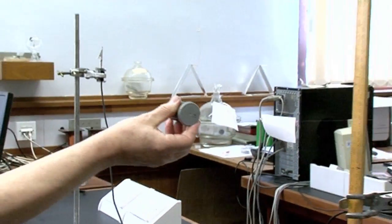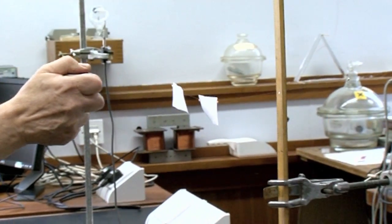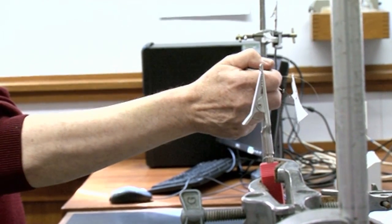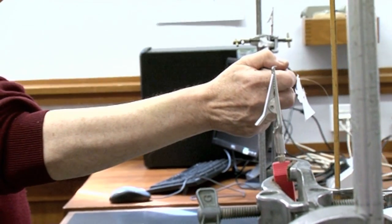If I put this horizontally, nothing much happens. But if I put it this way, as I move the magnet towards the wire, you can see it's repelled quite strongly.